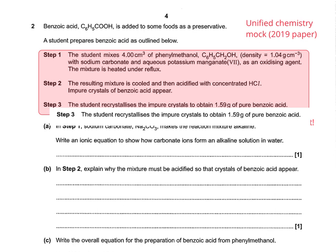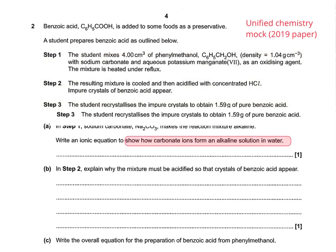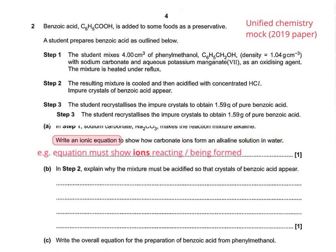It says in step one, sodium carbonate makes the reaction mixture alkaline. So there are two things to think about. First of all, you need to show how carbonate ions form an alkaline solution in water. It needs to contain OH⁻ so that it forms an alkaline solution in water, meaning OH⁻ has to be in the products. The second thing to think about is that it asks you to write an ionic equation, so the equation must show ions reacting or being formed.